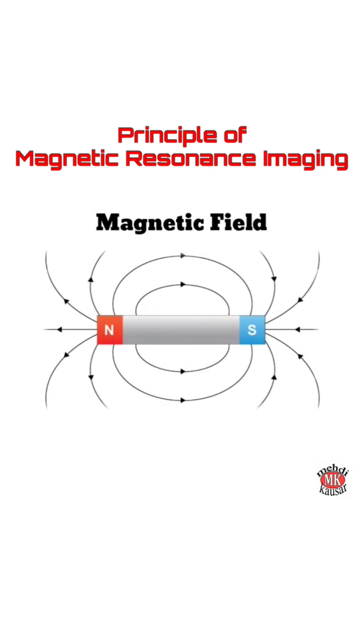When a strong homogeneous magnetic field is introduced by the MRI machine, protons align with that field.